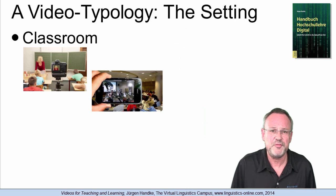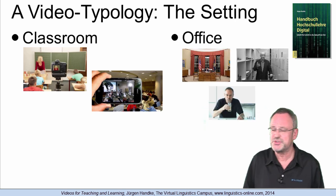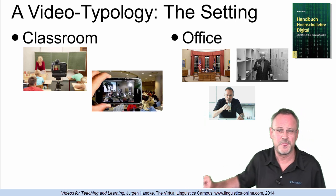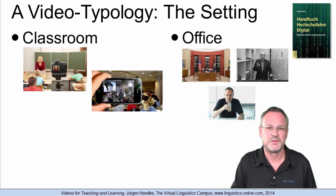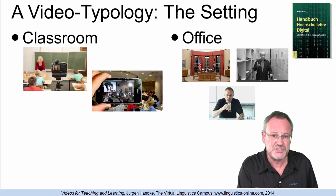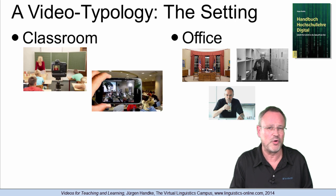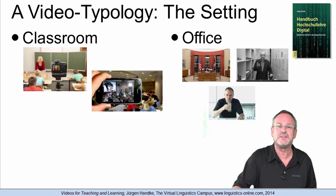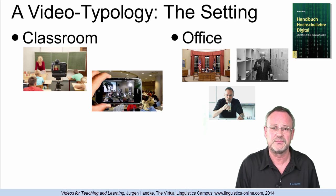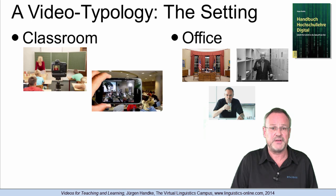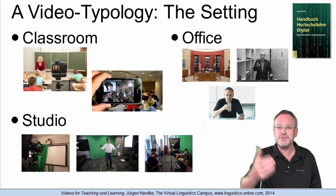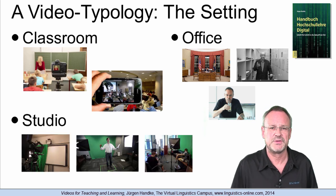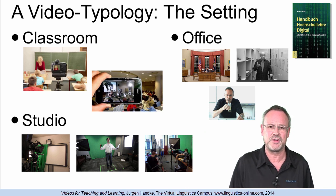In the office setting, the video is produced without an audience. The term 'office' is thus a placeholder for all environments outside the real-life classroom environment. And in the studio setting, you produce videos using professional equipment such as high-end cameras, green screens, teleprompters, etc. Let us look at some examples.